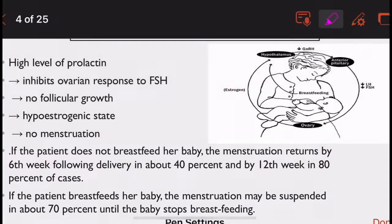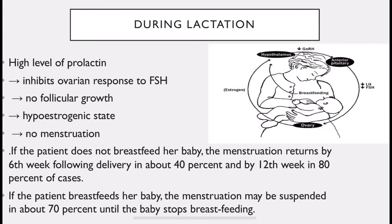If the patient does not breastfeed her baby, menstruation will return by the 6th week following delivery in about 40% of cases, and by the 12th week in 80% of cases. If the person is breastfeeding, menstruation will be suspended in about 70% of cases until the baby stops breastfeeding.